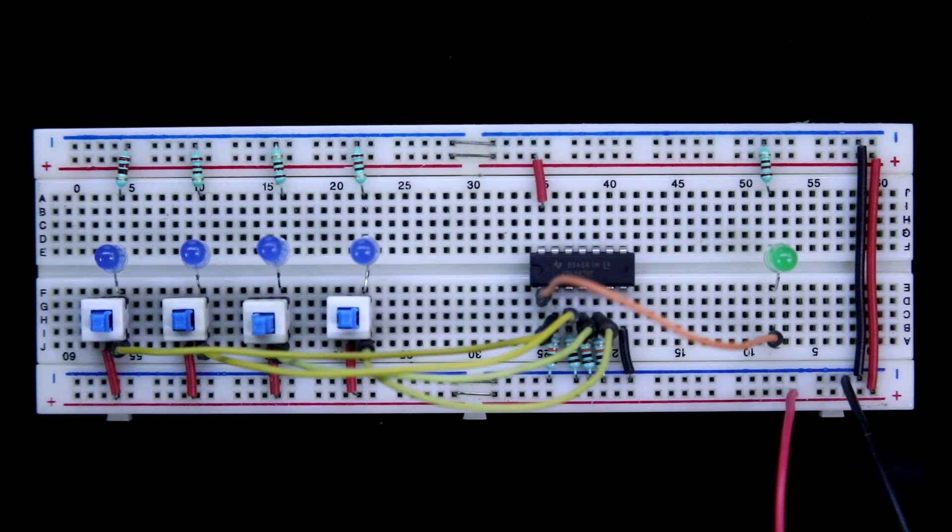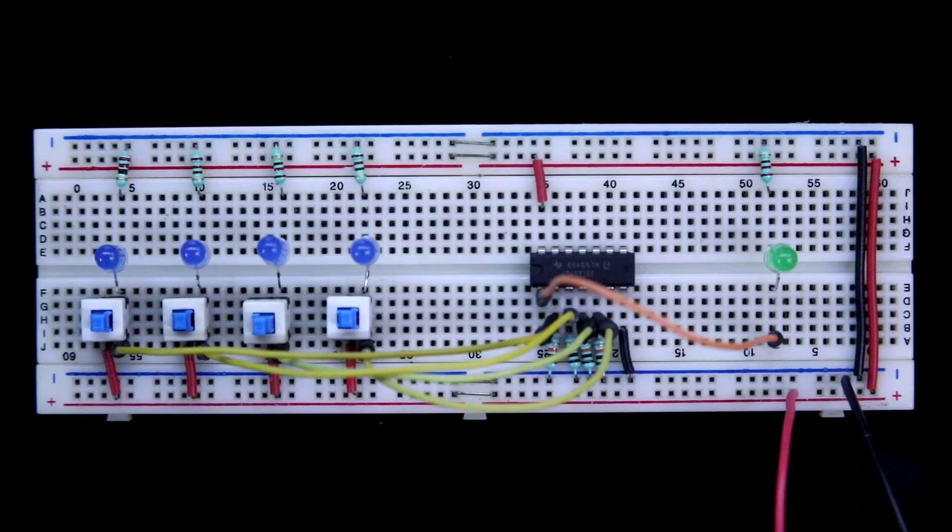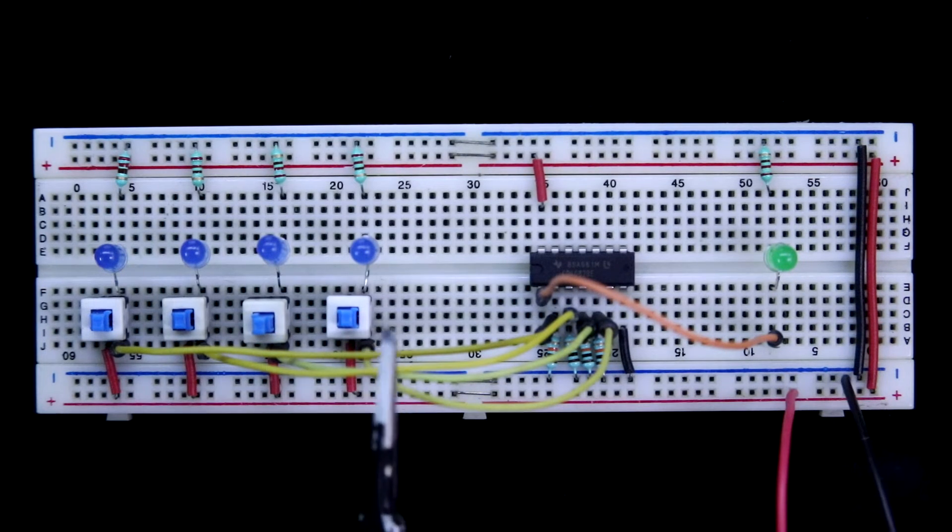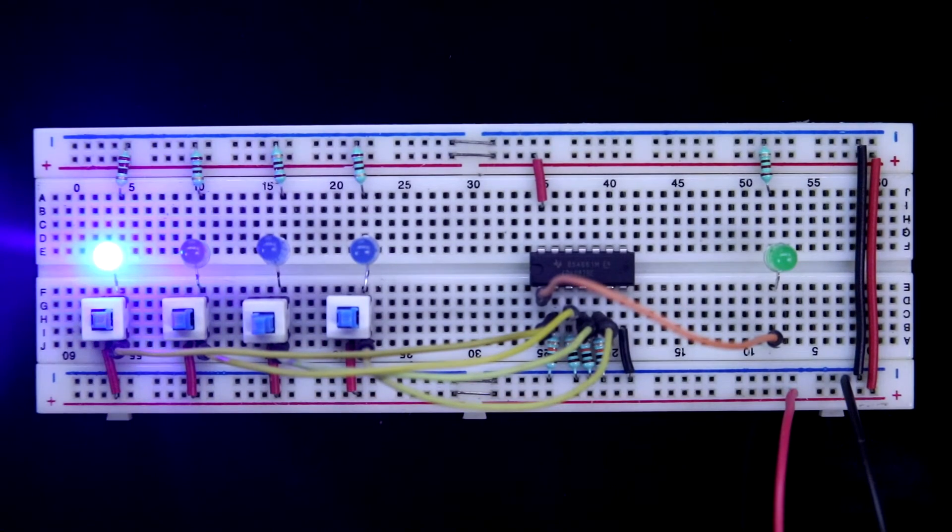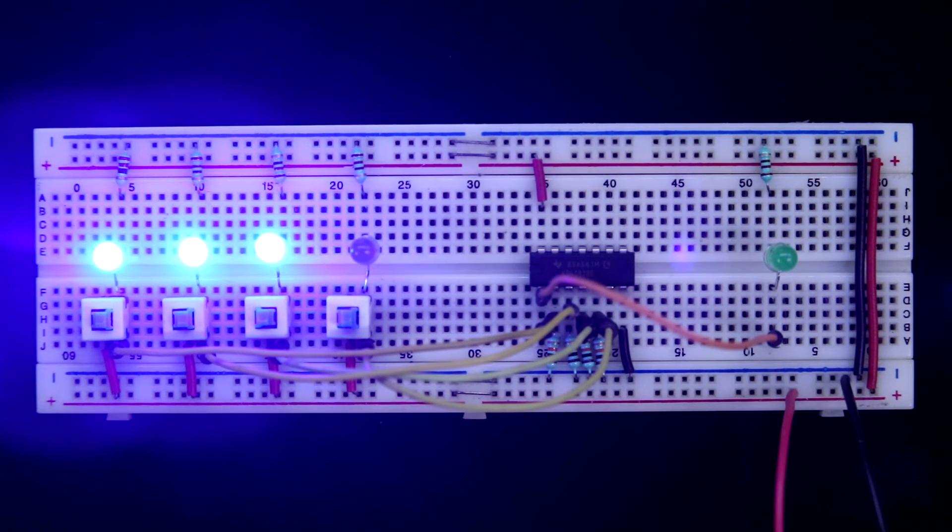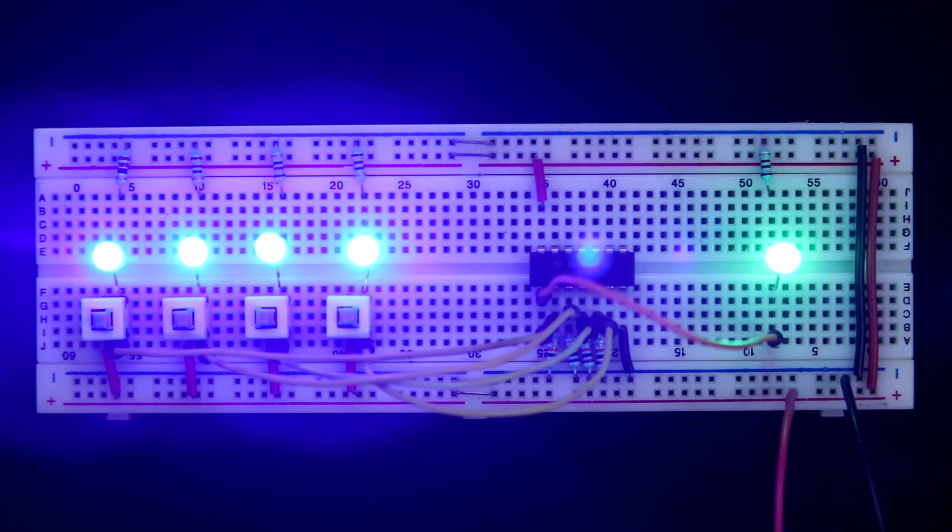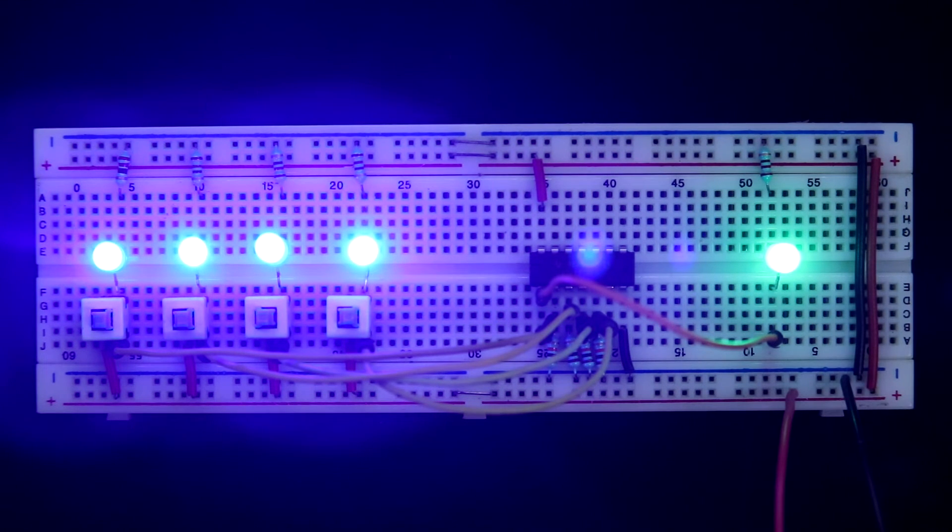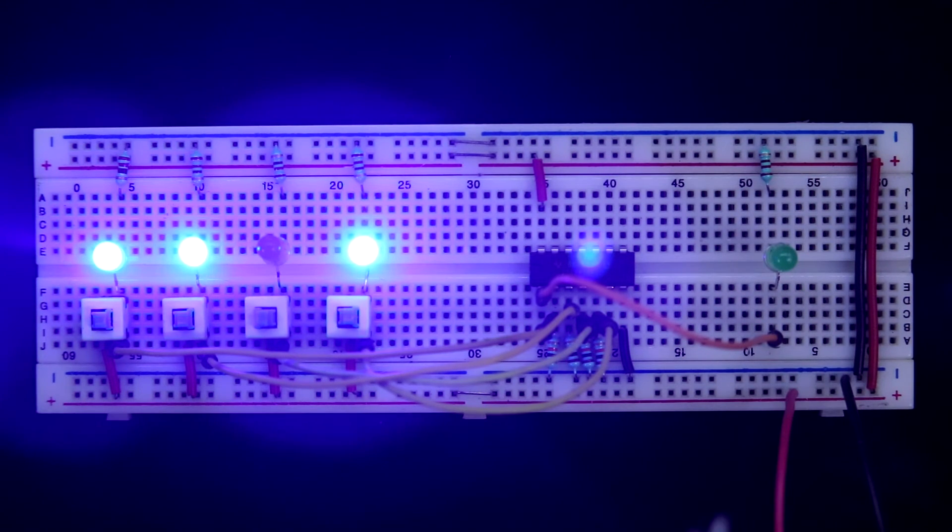As it is an AND gate, so whenever all the inputs are 1, then only we will get output as 1. All the inputs are 0, we are getting 0. The first input 1, second input it is 1, third input it is 1, now all the inputs are 1, then only we are getting the output. If we make any input 0, let's say this, we are getting 0 as our output. So this is AND gate.